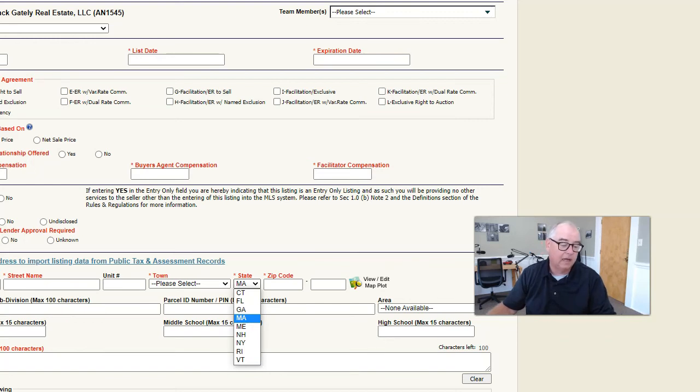So let's see, the list is Connecticut, Florida, Georgia, Massachusetts, Maine, New Hampshire, New York, Rhode Island, Vermont. So if you're licensed in any of those states, really benefits to have an MLS PIN account, doesn't it? So there's the list.